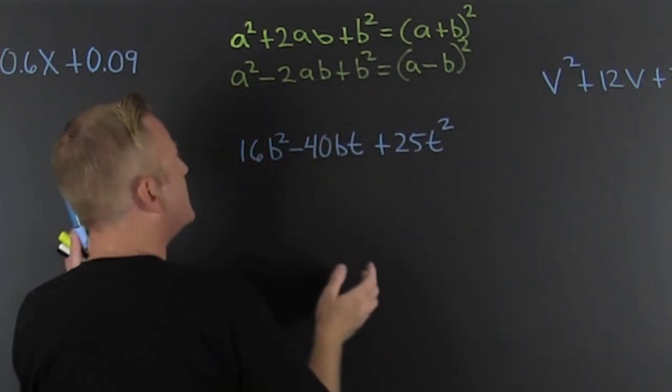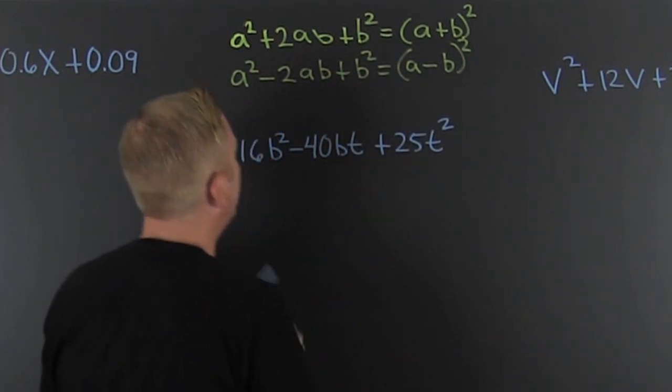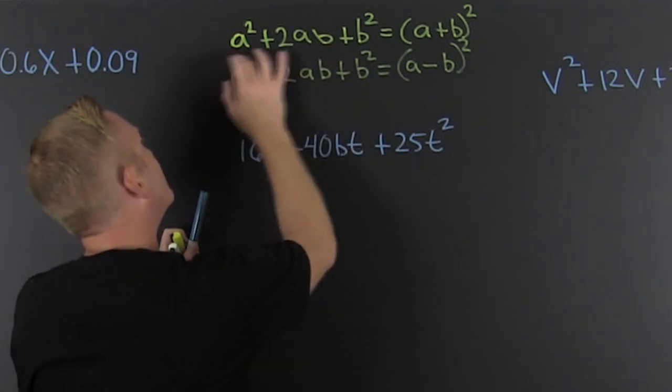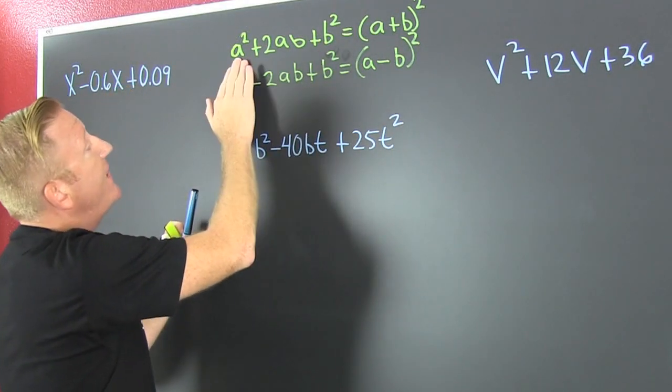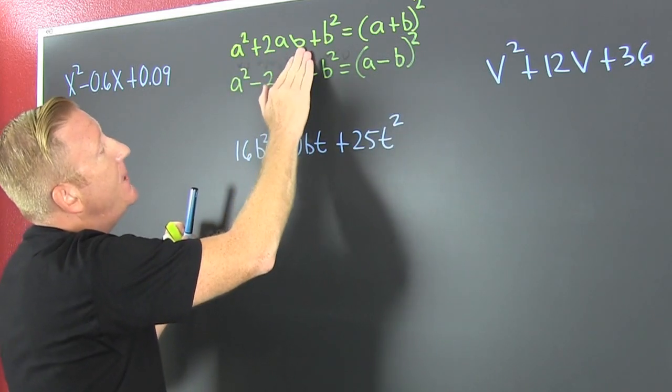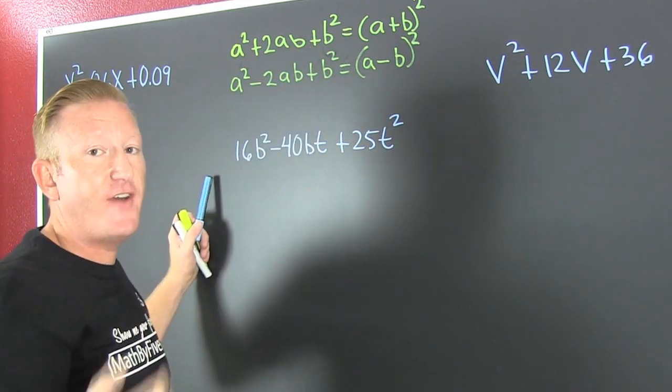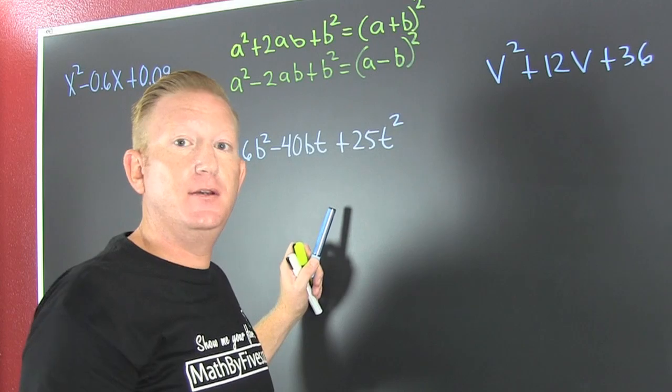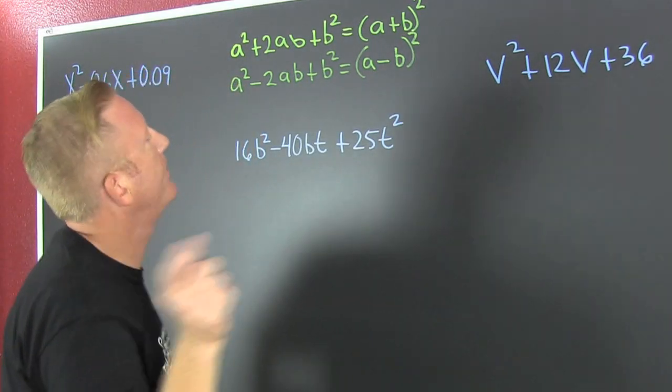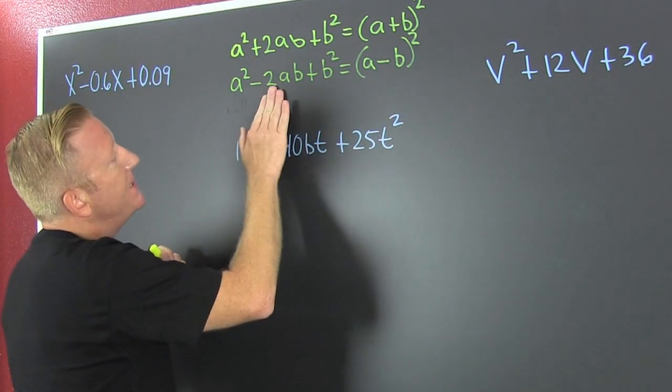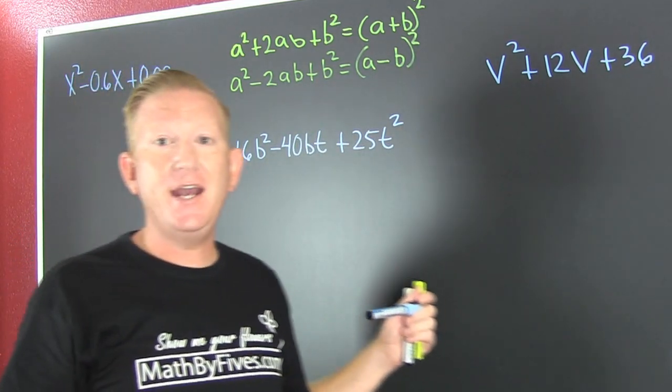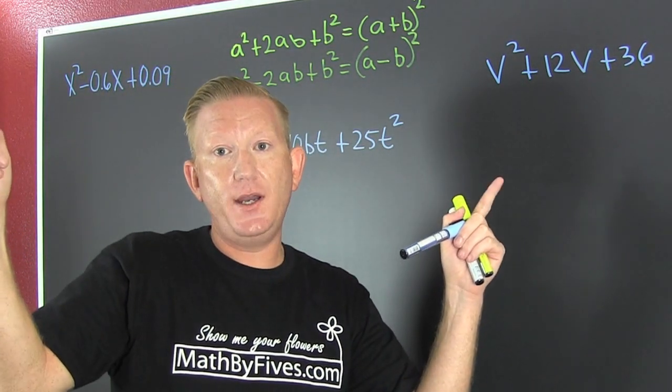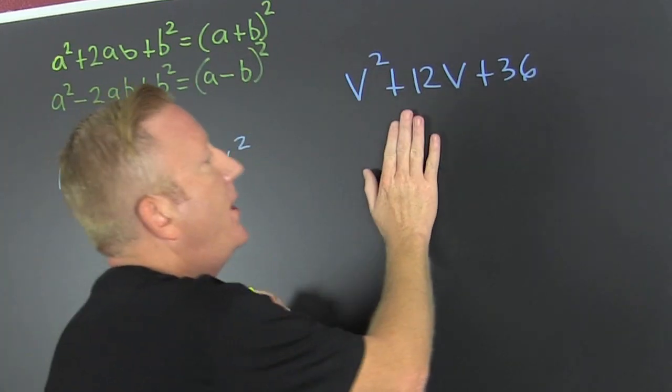If I can see a trinomial that is in this form where we have a² + 2ab + b², that factors into (a + b)². Similarly, if I have a² - 2ab + b², that factors into (a - b)². So let's be square over here.